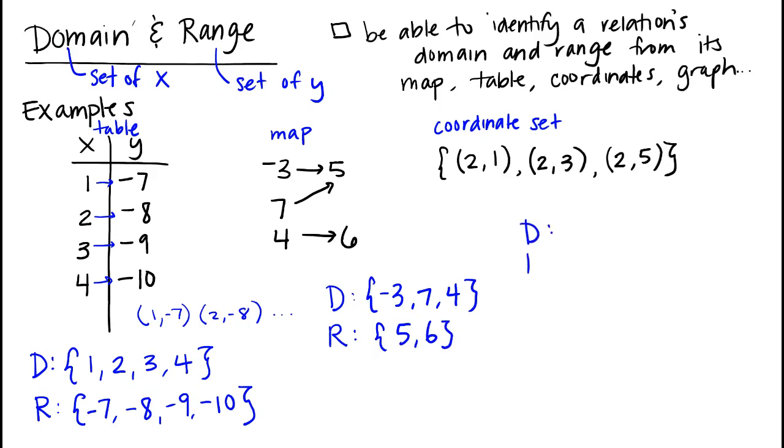The only one that you might have something wrong with, if you actually paused and tried this out, is remember, if we have this 2 multiple times, we only need to write it one time in our set notation. We don't have to write it all 3 times that it appears. But we do need to write the 3 different distinct values.